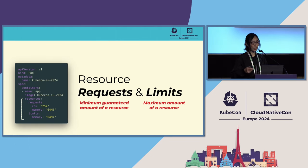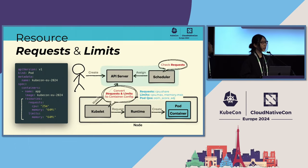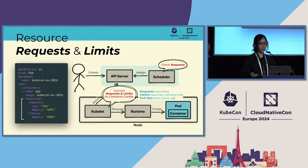It seems like two simple fields, but there is a lot of complexity under the hood. To maintain Kubernetes clusters effectively, it's important for us to understand them. As you can see from this rough diagram of pod creation, resource requests and limits are used in several components — like the scheduler checking requests, and kubelet combining requests and limits into container settings, and then the runtime sets them to the container.